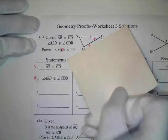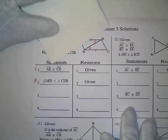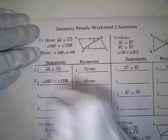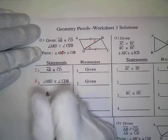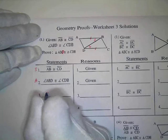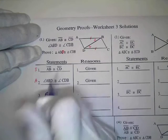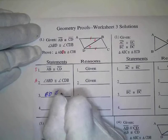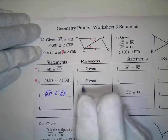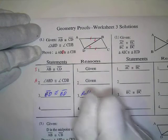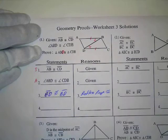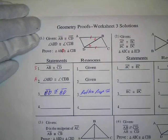DB is in triangle ABD and DB is in triangle CDB, so we can say that BD is congruent to BD, and that's by the reflexive property of congruence.